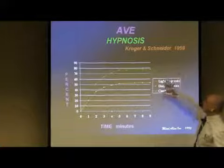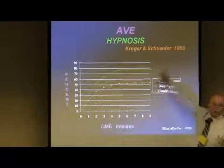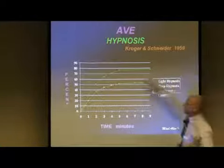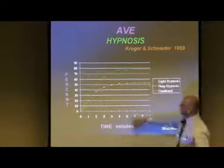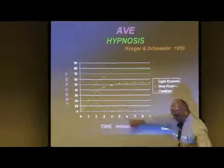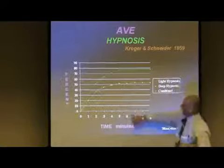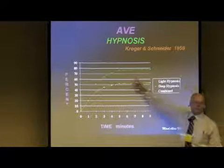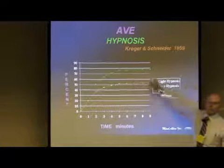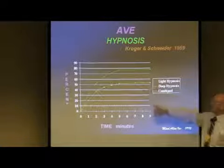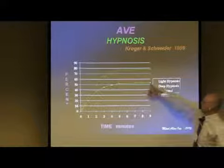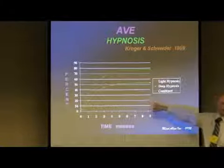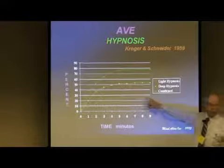We're going to look at hypnotic trances. This was Kroger and Schneider, the guys who invented the brainwave synchronizer. They found that using alpha stimulation with the synchronizer, in about six minutes, 78% of everyone they tried were in a hypnotic trance, and twice as many were in a deep trance compared to a light trance. So very fast.